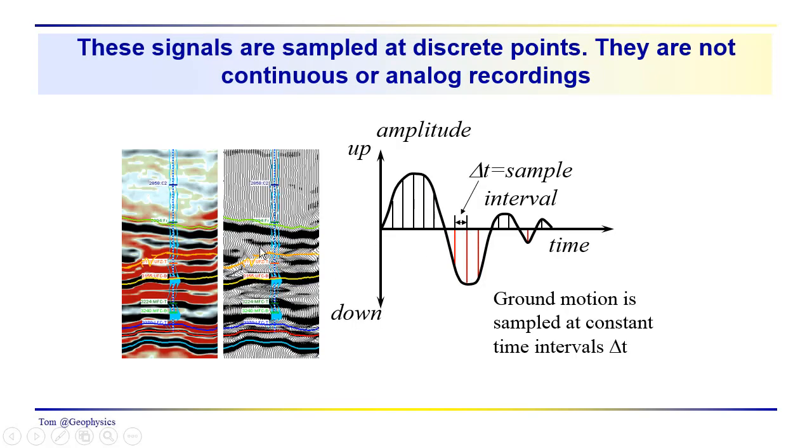So, when we record a signal, we have two different types of displays here. This is the variable area wiggly trace display. We're just seeing the positive and negative amplitudes kind of traced out as we have over here, except that the positive amplitude, the positive cycles are colored in.